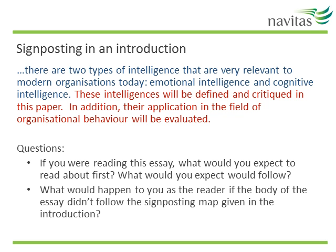The key thing to highlight here is that the signposting prepares the reader's mind for the information that will follow in the body of the essay. If the reader already has a map of what will come, they will find it easier to understand how the parts of the body fit together. Take another look at the red sentence. The reader would expect a definition and critique of each type of intelligence — probably emotional intelligence first, then cognitive intelligence — followed by a discussion of how these concepts can be used in organisational behaviour and whether they are in fact useful.